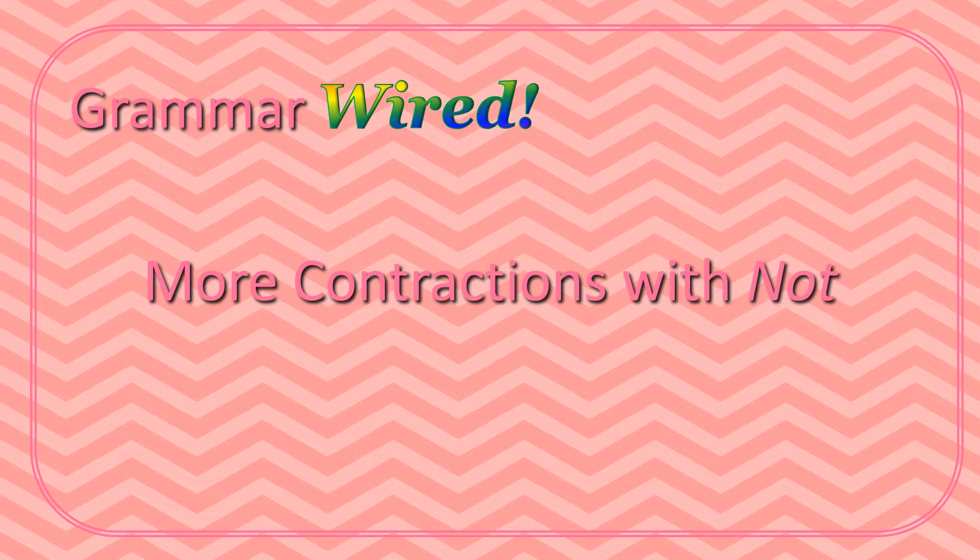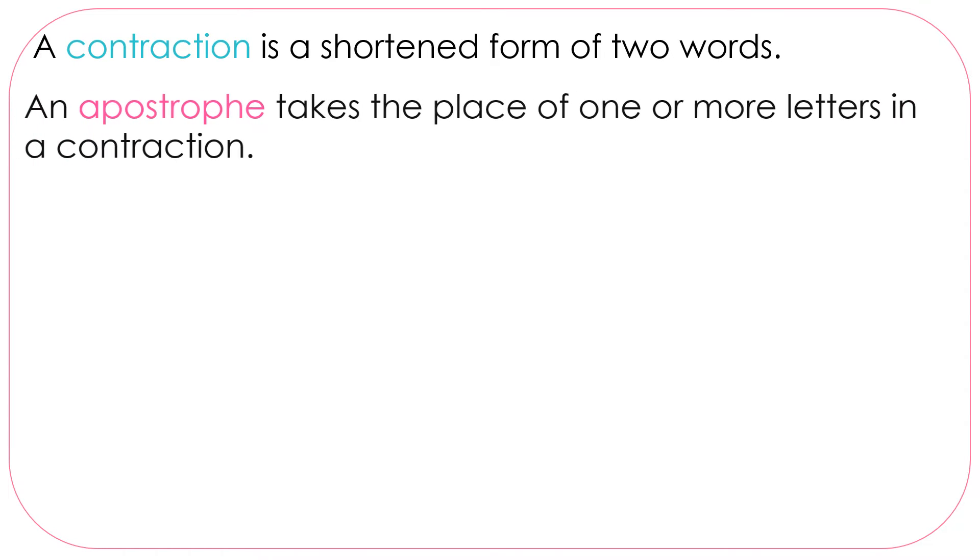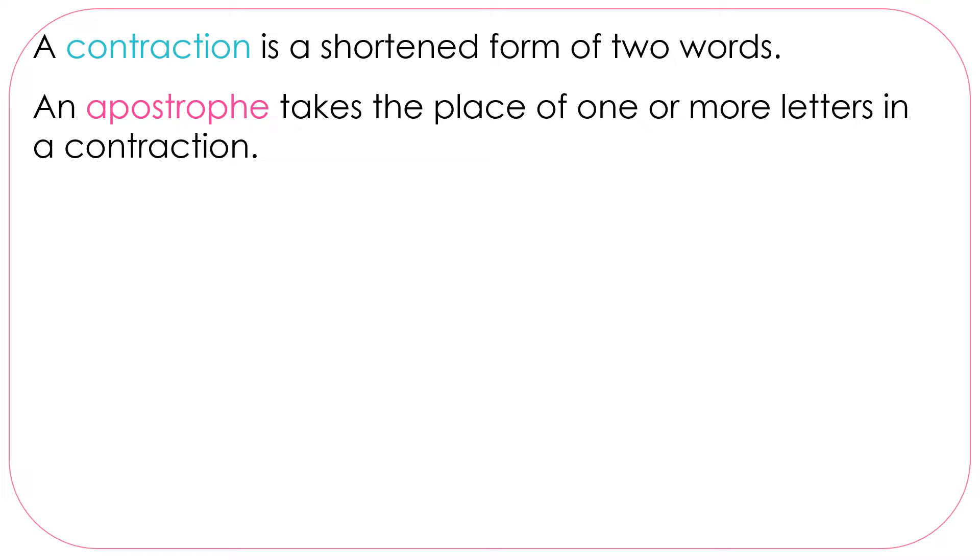More contractions with not. A contraction is a shortened form of two words. An apostrophe takes the place of one or more letters in a contraction. Let's look at some new examples.